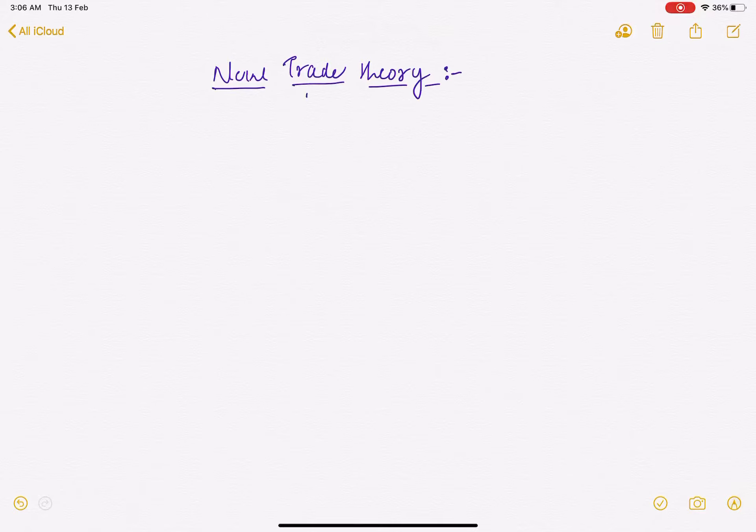So in new trade theory, we discussed economies of scale, what are the types of economies of scale? There are two types.